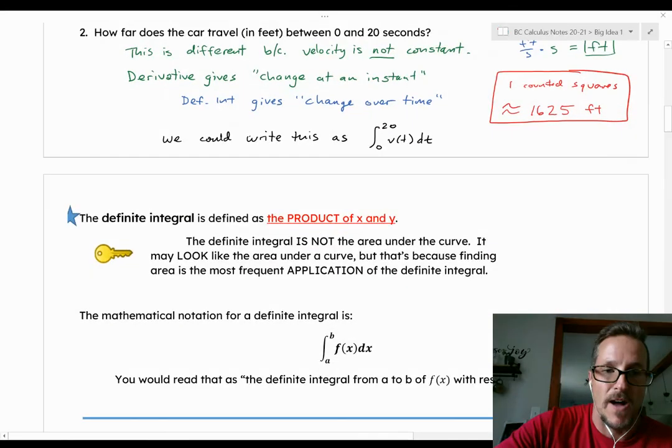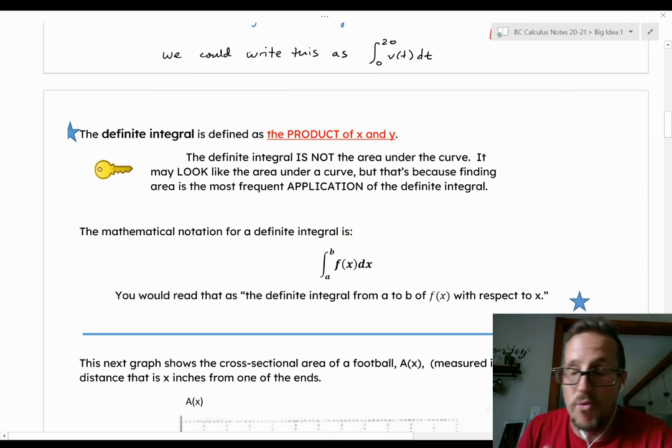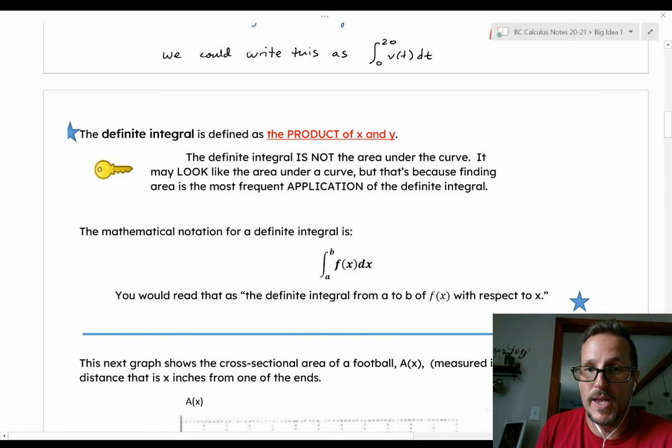So let's define what a definite integral actually is. Definite integral is defined as the product of X and Y. It's not the area under the curve. Pump the brakes. That's what it looks like if you graph it. I get your point. But there's a difference between what something is and what something does. The definite integral's application is to find the area under the curve. But we don't want to say that definite integral is area. We want to say that definite integral is a product of X and Y.